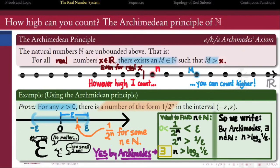Then for that value of n, we can rearrange this inequality to show that 2 to the n is greater than 1 over epsilon, and taking reciprocals on both sides, 1 over 2 to the n is less than epsilon. And that completes our proof, because we've shown that a number of the form 1 over 2 to the n exists which is less than epsilon.